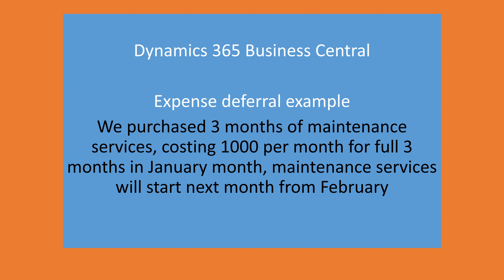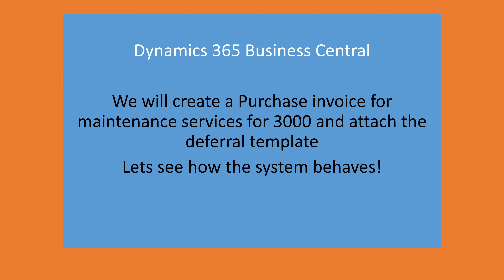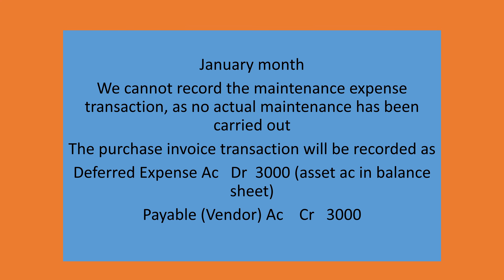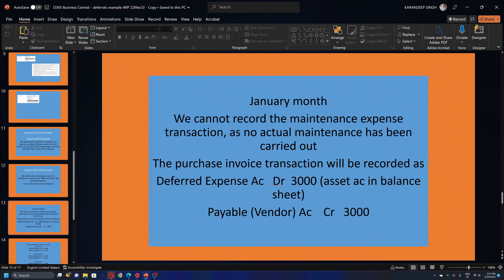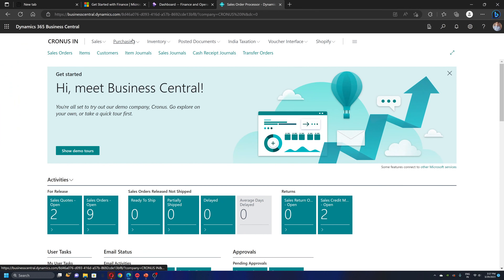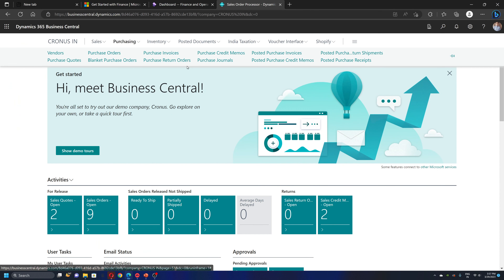Next, we are going to create a purchase invoice. We purchase three months of maintenance services costing 1000 per month, for three months starting January. The maintenance services will start from the next month, which is February. So we create a purchase invoice for maintenance services for 3000 and attach the deferral template. Let's see how the system behaves.